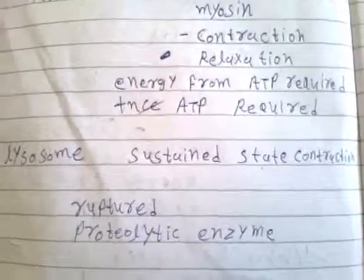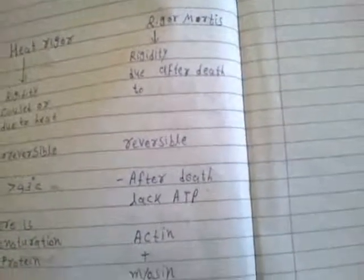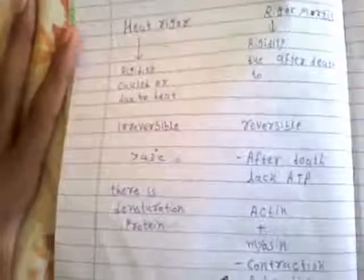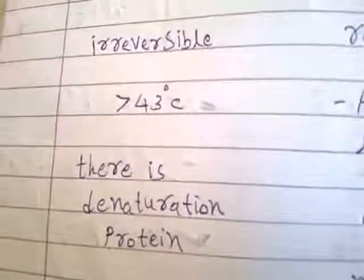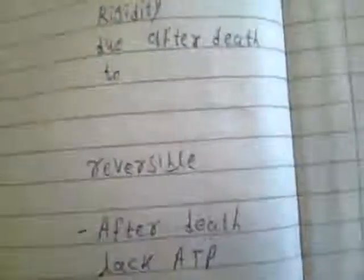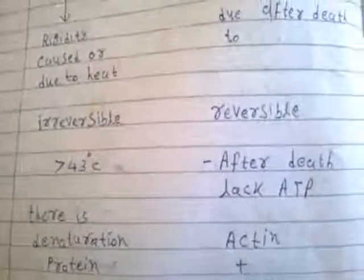Proteolytic enzyme causes lysis of protein — the protein being actin and myosin — and that is why rigidity removes, making rigor mortis a reversible phenomenon. Heat rigor is a sustained state of contraction due to heat, because when temperature exceeds 43 degrees centigrade, denaturation of protein occurs. Rigor mortis is the same — a sustained state of contraction after death due to lack of ATP — but heat rigor is irreversible, while rigor mortis is reversible.